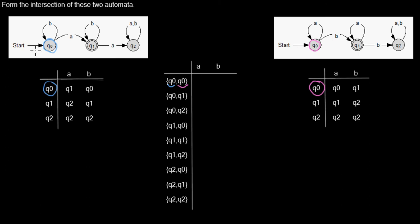How do we retrieve the transitions? In the left automaton, if you are in Q0 and read an A, you transition to Q1. In the second automaton, if we are in Q0 and read an A, we stay in Q0. So this is equivalent to a transition in the new automaton to state Q1,Q0 — because in the first automaton we move to Q1, and in the second we stay in Q0.